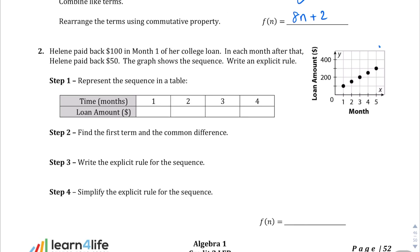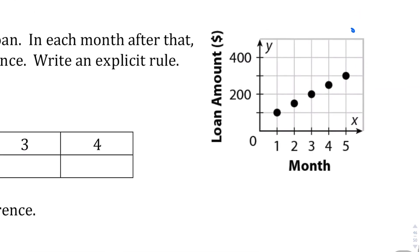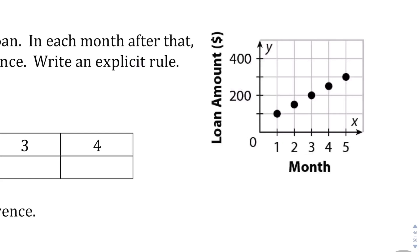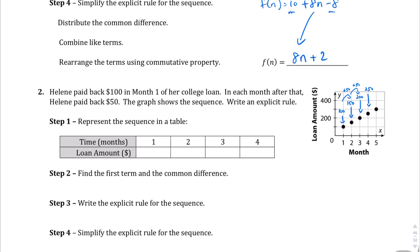Let's take a look at question number 2. Helene paid back $100 the first month on her college loan. Each month after that, she paid back 50. The graph shows the sequence. Let's write the explicit rule. First month, she's paid back $100. In the second month, she pays 50 more. So now she's paid a total of 150. Month 3, she's paying 50 more, which now she's paid 200, so on and so forth. Each time, she's adding 50 more dollars to her total paid. The common difference there is going to be 50.